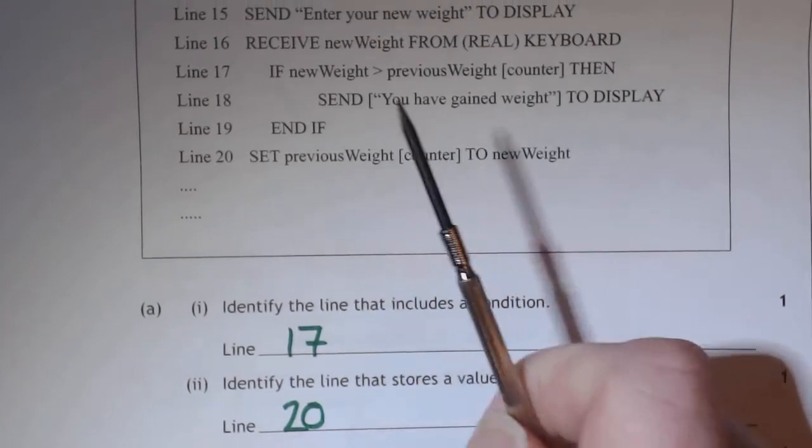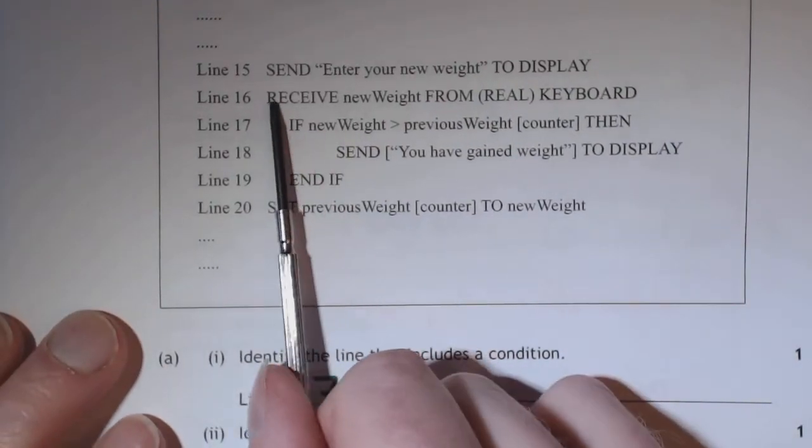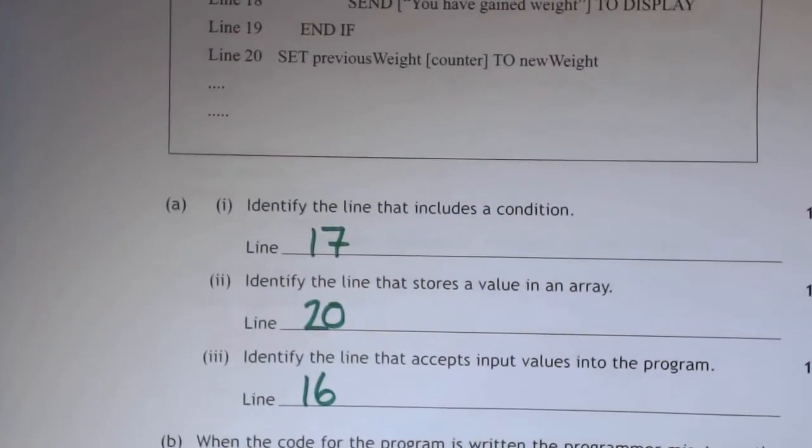And if you want to accept a value, you accept a gift, you receive that gift. So if you want to receive a new weight from keyboard, you're taking that value in, and that's line 16.